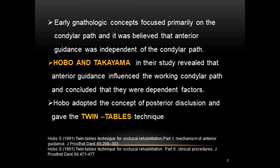In previous sessions on philosophies in full mouth rehabilitation, we discussed the nathological concept by McCollum, Stuart, and Stallard — please refer to session 5. In that concept, they focused primarily on the condylar path, and it was believed that anterior guidance was independent of the condylar path. However, it had several limitations: discrepancy between centric relation and centric occlusion, the need for a fully adjustable articulator, and provisional restorations in cast metal which were costly and difficult to equilibrate.